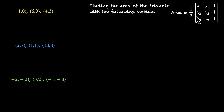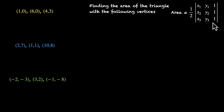Here is the formula that we have derived. Area of triangle equals half times the determinant of x1, y1, 1 / x2, y2, 1 / x3, y3, 1. Here x1, y1, x2, y2, x3, y3 are the coordinates of the vertices of the triangle.